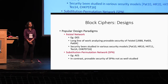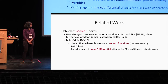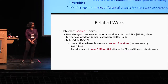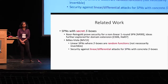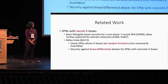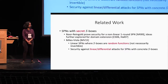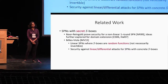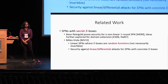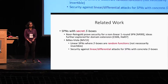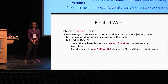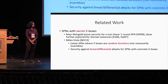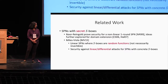In this work, we focus on provable security of SPNs and try to address this gap. SPNs with secret S-boxes have been studied before. Reingold proved security of a one-round nonlinear SPN, and those ideas were further explored in the context of domain extension. Miles and Viola also studied linear SPNs where the S-boxes are random functions — in particular, not invertible, so the SPN itself may not be invertible. They showed provable security in this context and also studied security against linear and differential attacks for SPNs with concrete S-boxes. Our work considers a more general setting and more general attacks, capturing additional settings beyond what was done by Miles and Viola.